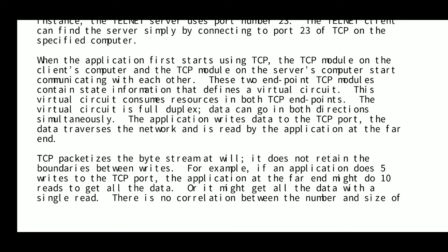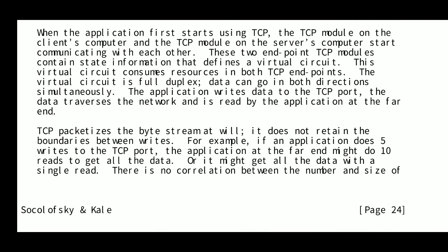The two TCP endpoint modules contain state information that defines a virtual circuit, establishing a virtual circuit between the end-to-end devices. This virtual circuit consumes resources at both TCP endpoints. The virtual circuit is a full-duplex channel, meaning both sides can simultaneously send and receive data in both directions at the same time.